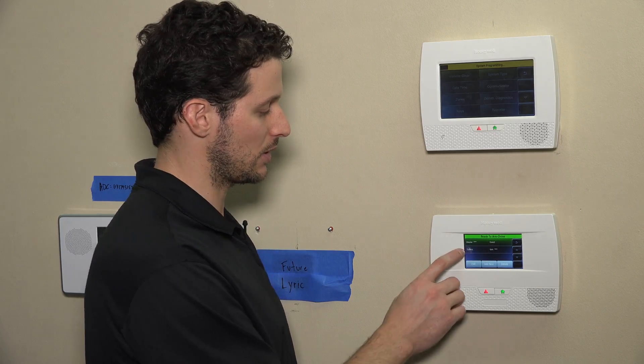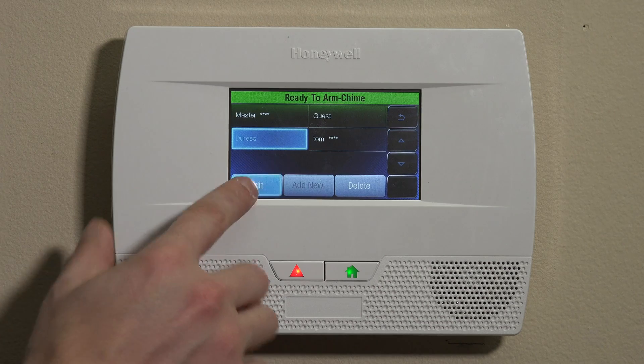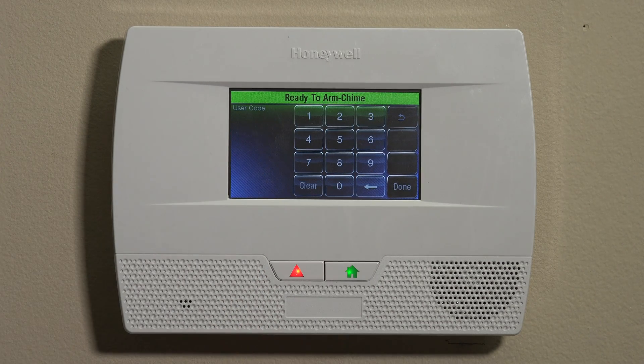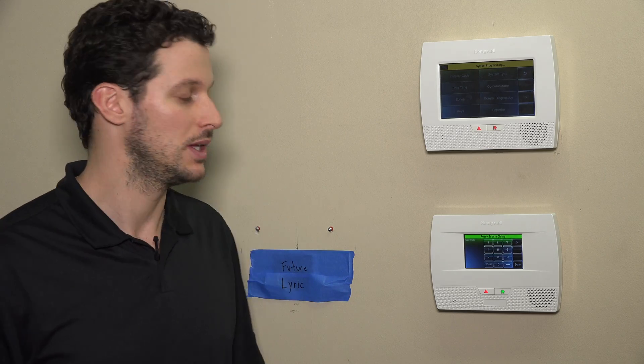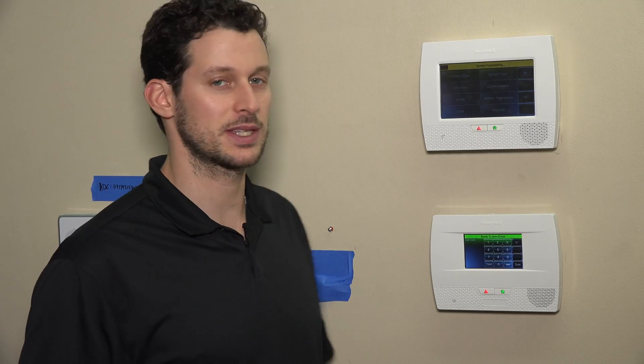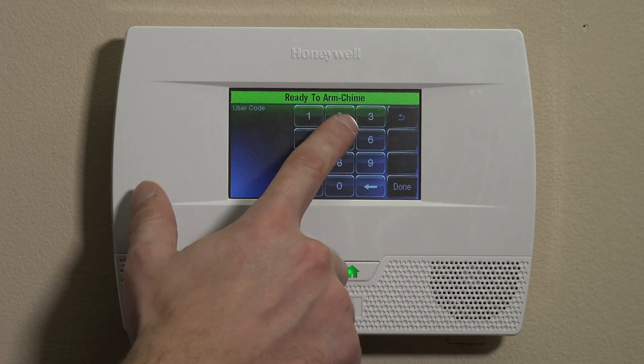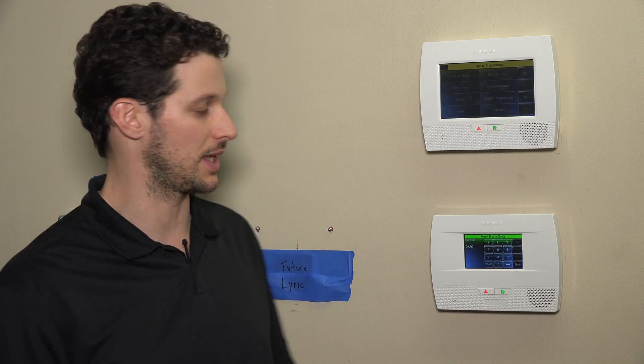Once you're done setting those codes, the last thing is the duress code. If you click Duress and Edit — traditionally, the duress code you want to keep something very simple so you can remember it in a situation of duress. What it does is when you use the duress code to disarm, it sends a silent panic alarm to your central station. So if you do have monitoring services, entering this code will send the silent panic — it'll seemingly disarm the panel, but it'll send that silent panic and send the police. Common ones are right down the middle: 2580. Choose anything easy to remember that you won't confuse with your master code or subuser codes.